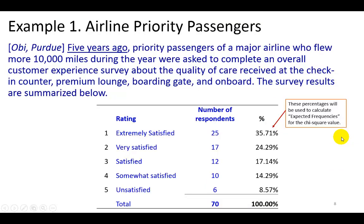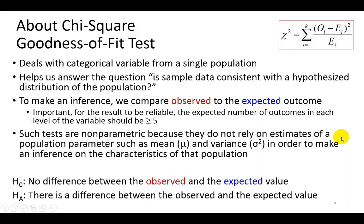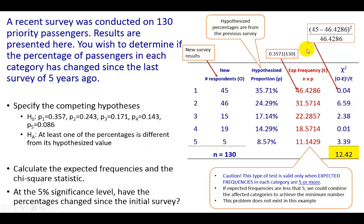The chi-square statistic is the ratio of the squared difference between observed and expected divided by the expected value, and then we sum all of them. That comes out to be 12.42.